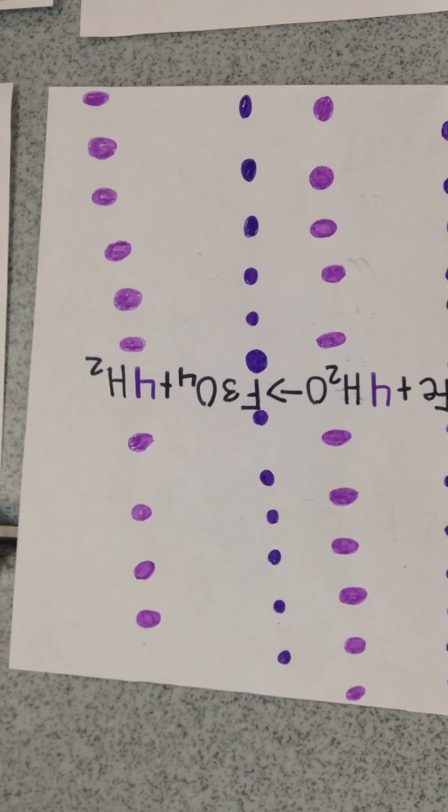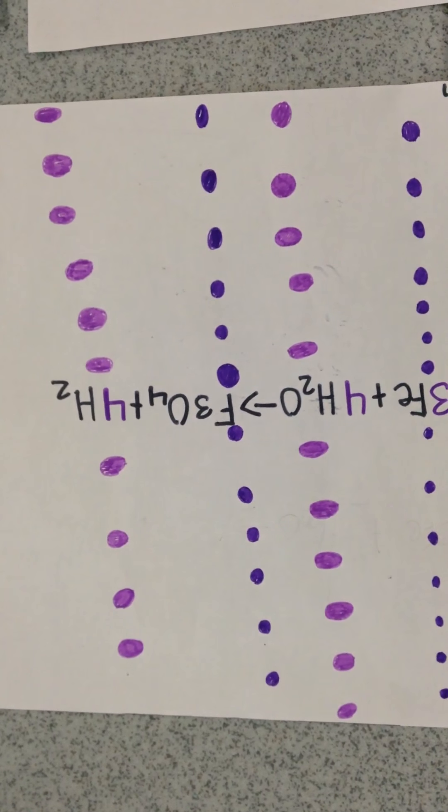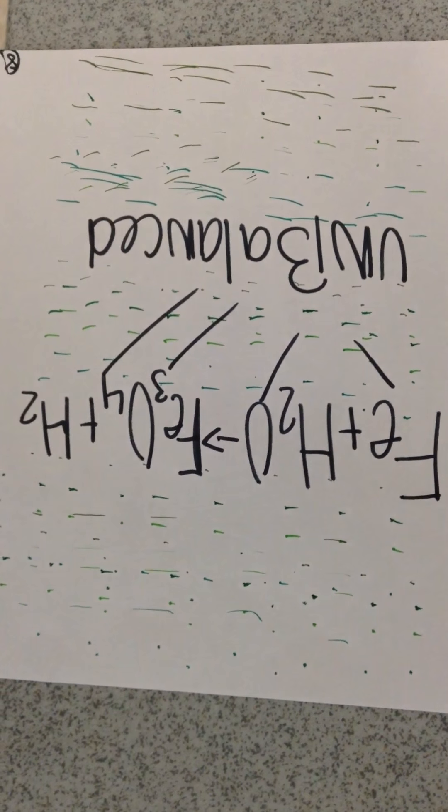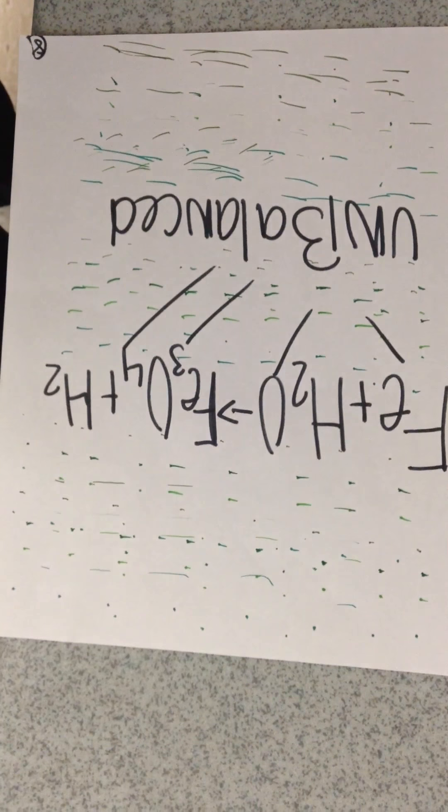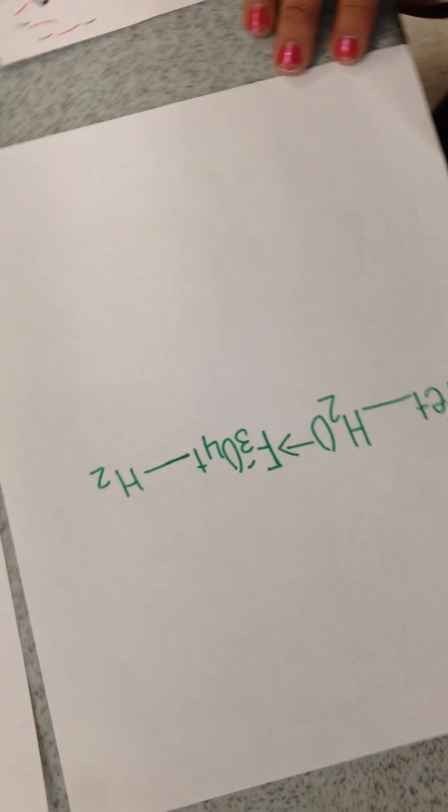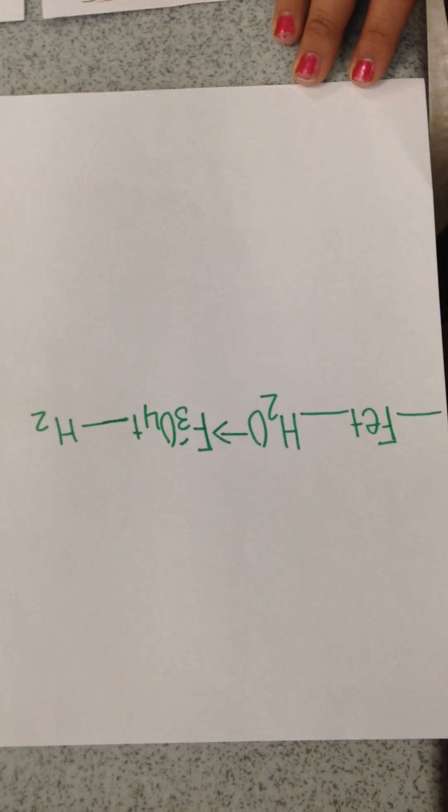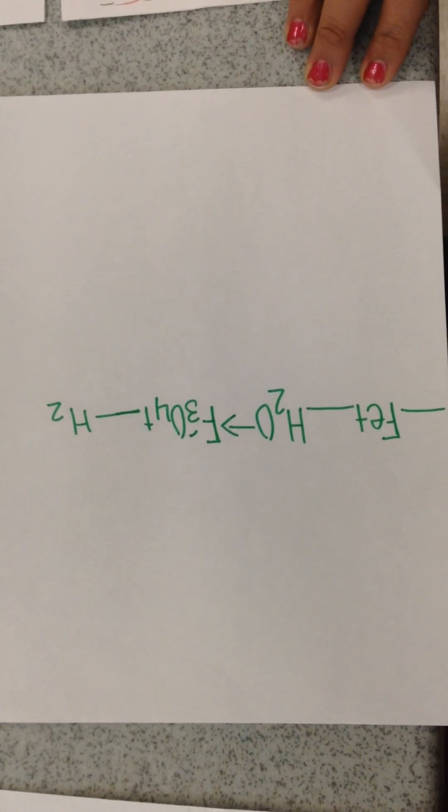3Fe plus 4H2O equals Fe3O4 plus 4H2. 3Fe plus H2O equals H2O. 3Fe equals Fe3O4 plus H2O.